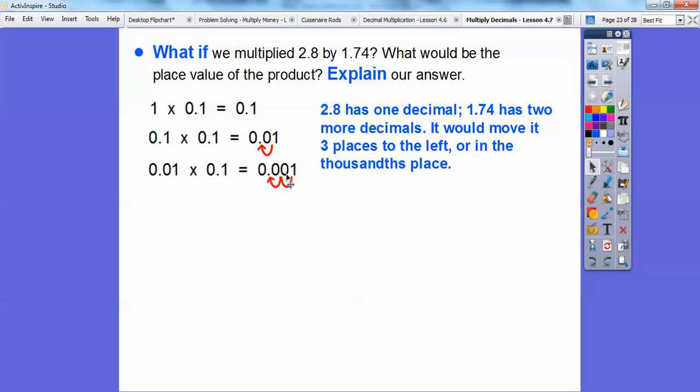And three places to the left, this is in the thousandths spot. Remember, this is tenths, hundredths, thousandths. So it would take us to the thousandths spot. So two decimals there, one decimal there. It's going to move us over three decimals to the left, so that would be in the thousandths spot.